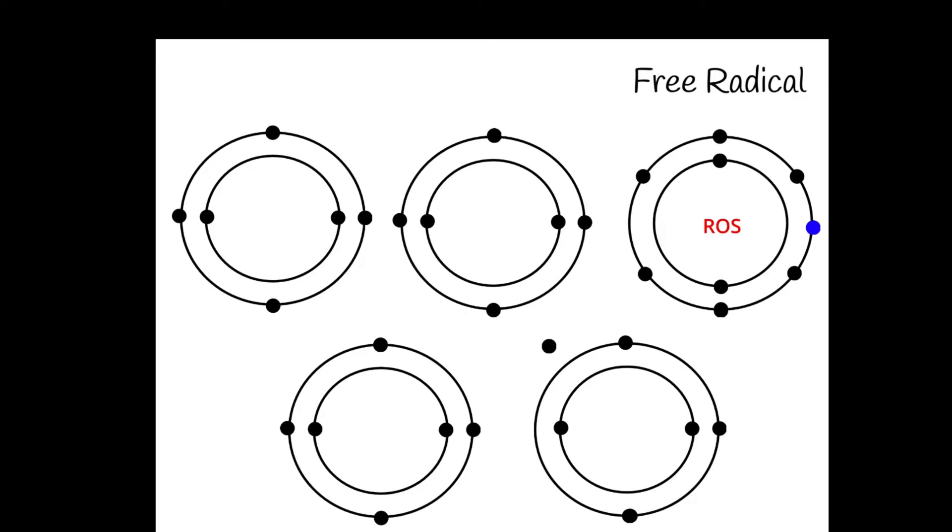So to stabilize themselves, ROS react with and steal electrons from other molecules, which then become free radicals that yet again steal electrons from other molecules.